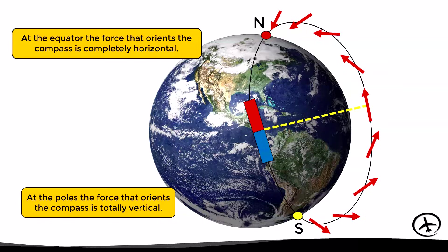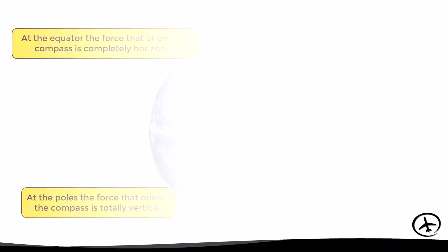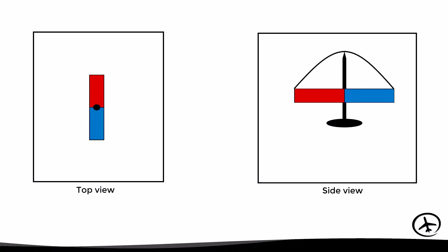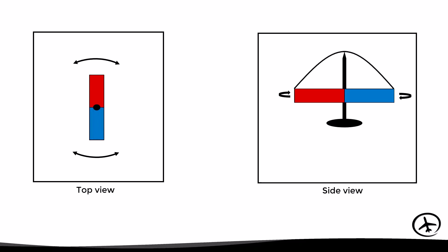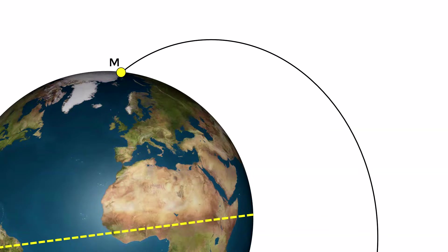At this point we might wonder: how does this affect a compass? A compass is a magnet free to rotate around a pivot point, and in order to give the heading indication this magnet should rotate horizontally. Therefore it requires the horizontal component of the earth's magnetic field — the horizontal force parallel to the surface, not the vertical one. If we place a compass at the equator, the magnetic force acting on it is completely horizontal, so the compass will rotate horizontally and give the heading indication properly.